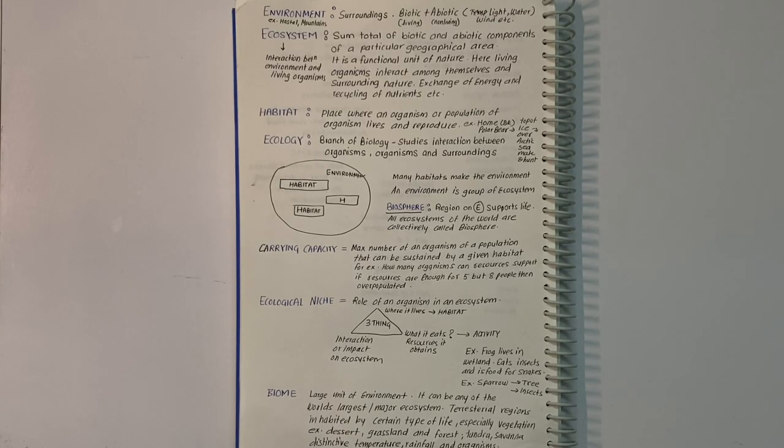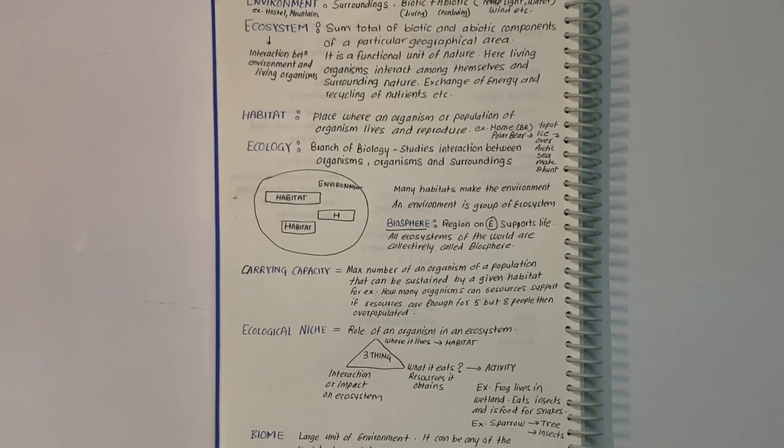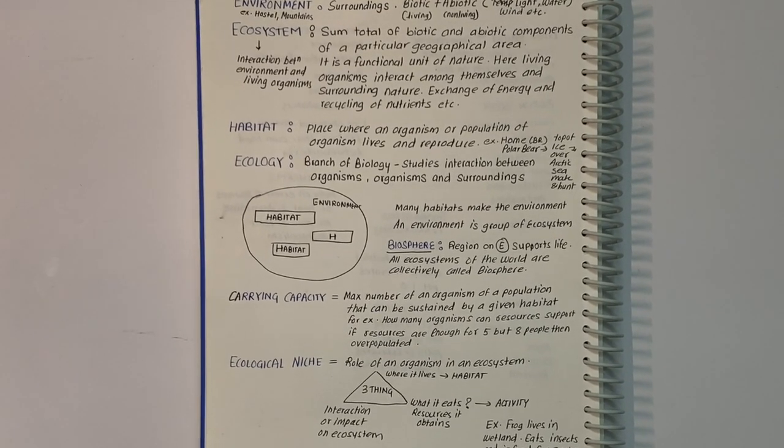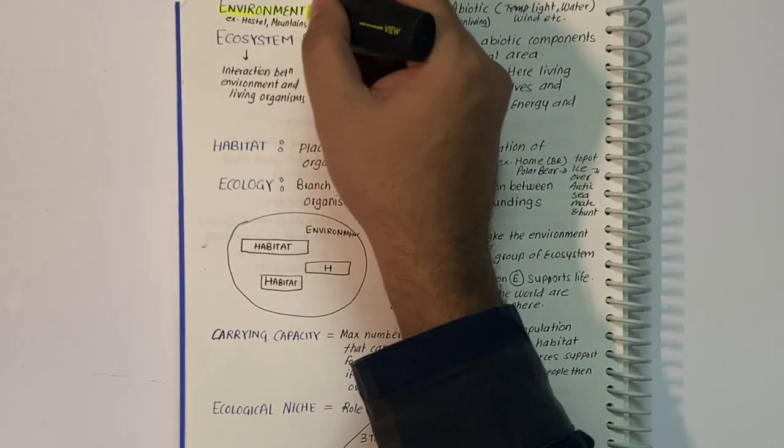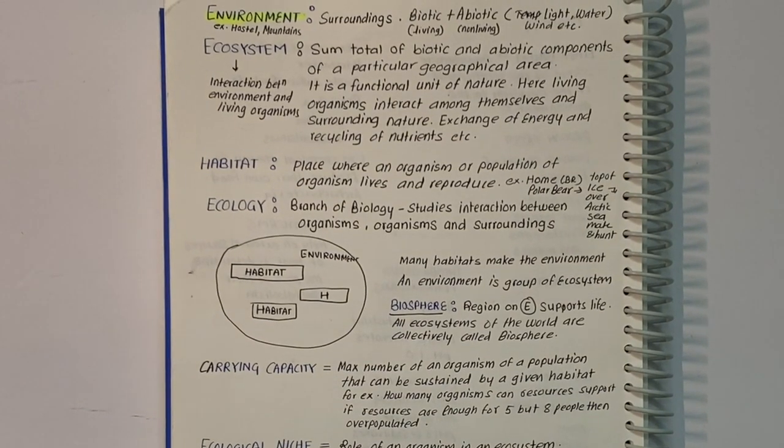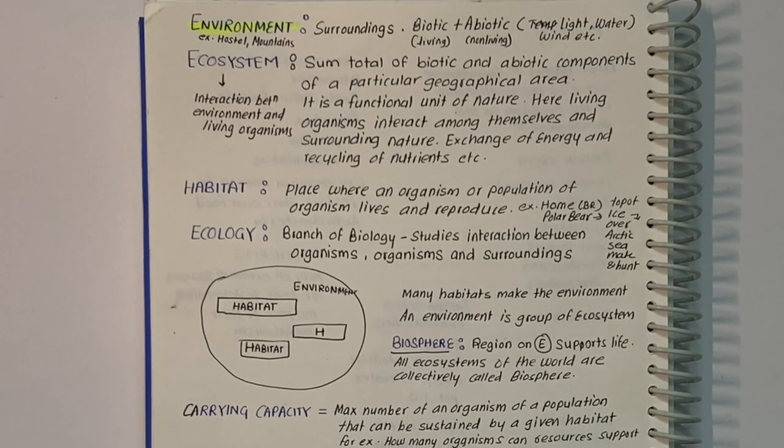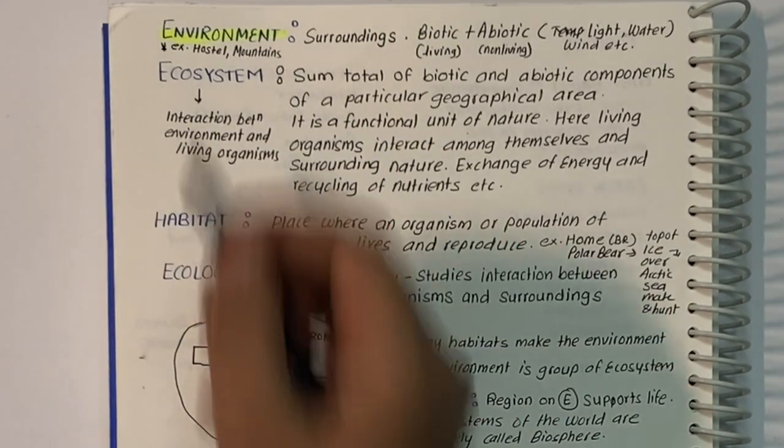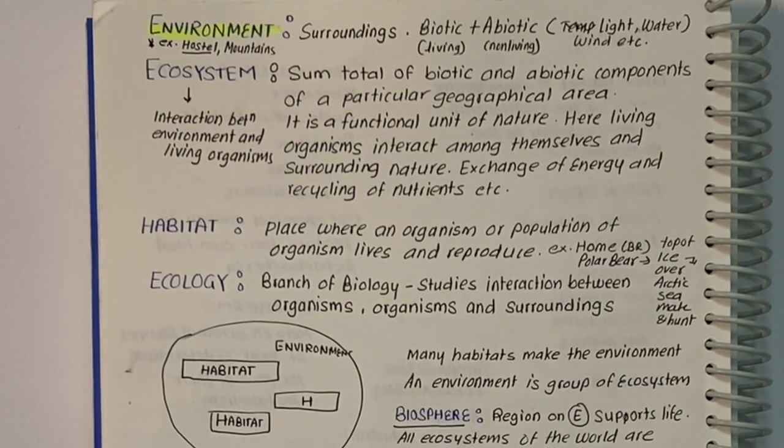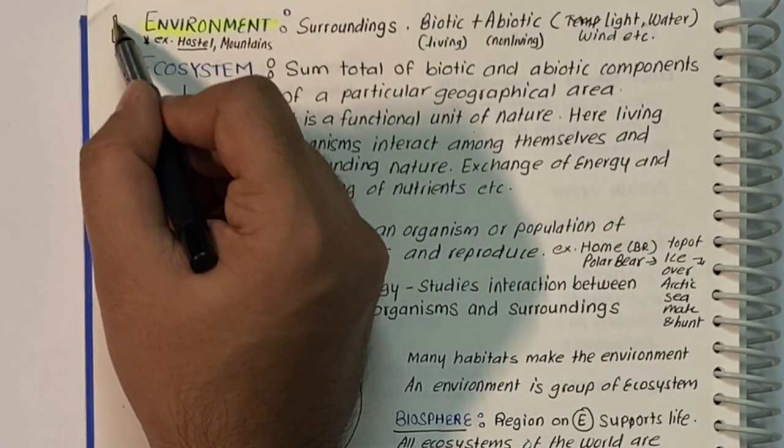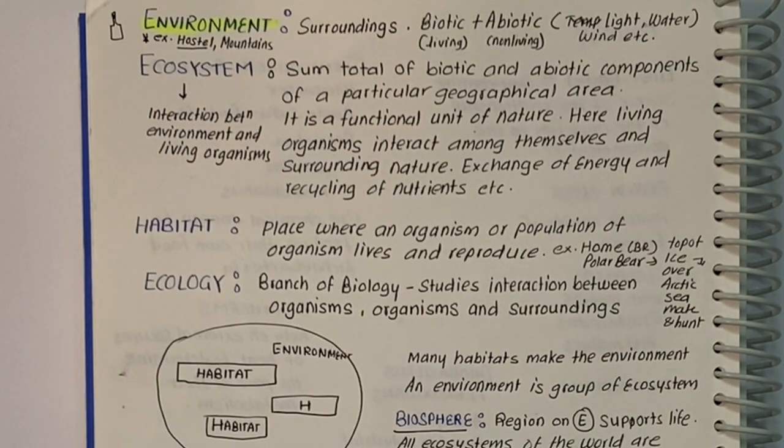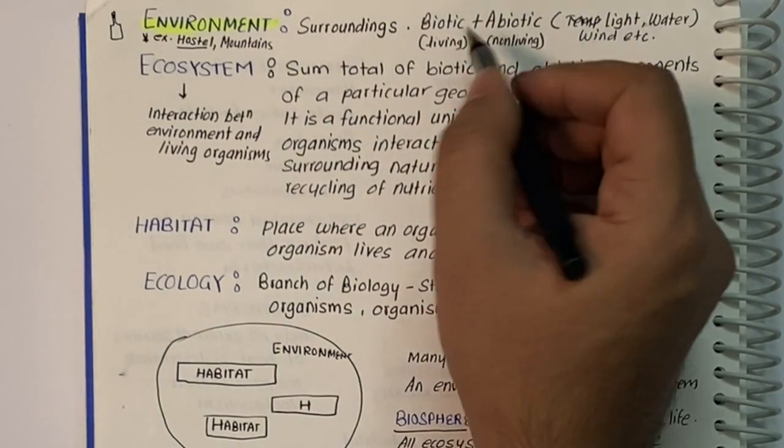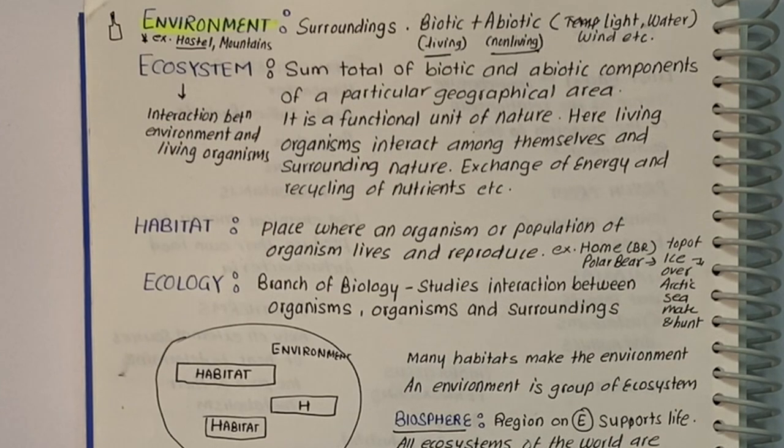Let us discuss basic terms. Environment means our surroundings - like the environment of our room or hostel. It is a group or system of ecosystem that includes both biotic factors like human beings and animals, and abiotic factors like sunlight, soil, and temperature.